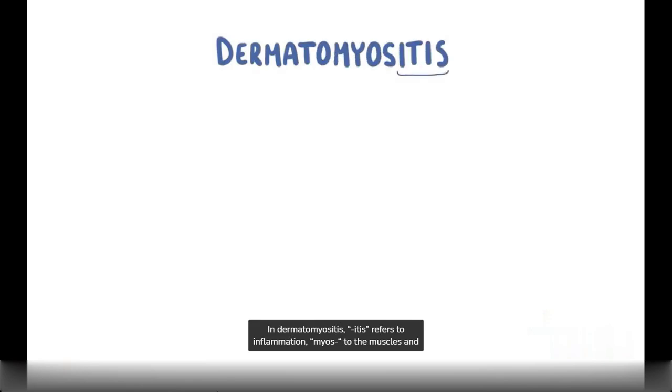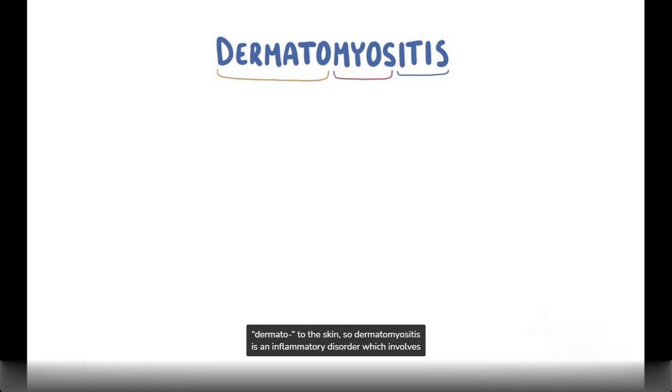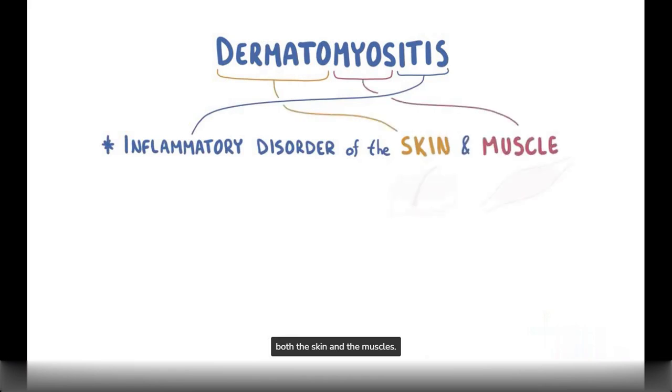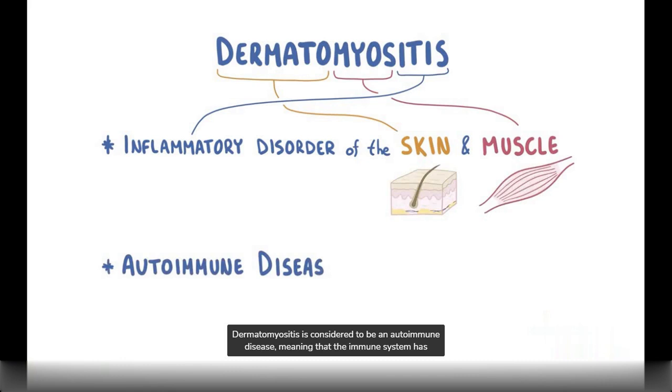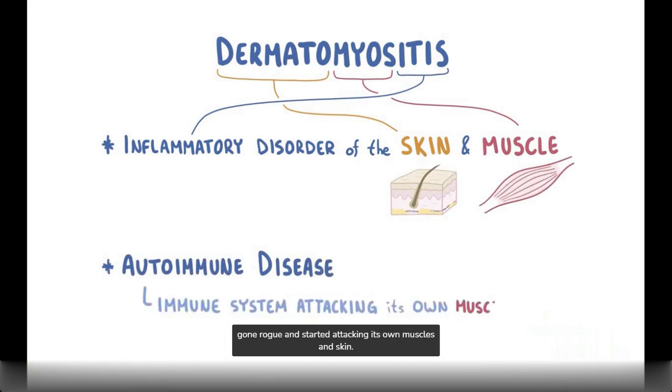In dermatomyositis, itis refers to inflammation, myos refers to the muscles, and dermato refers to the skin. So dermatomyositis is an inflammatory disorder which involves both the skin and the muscles. Dermatomyositis is considered to be an autoimmune disease, meaning that the immune system has gone rogue and started attacking its own muscles and skin.